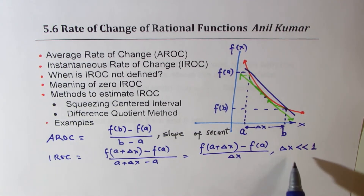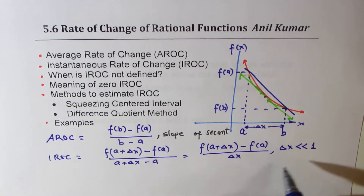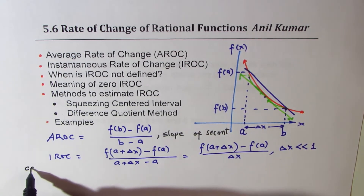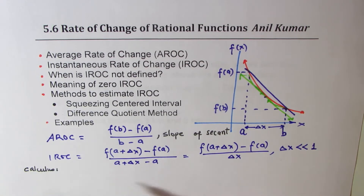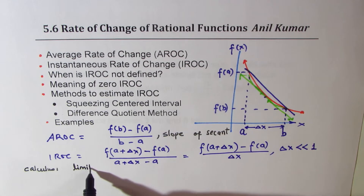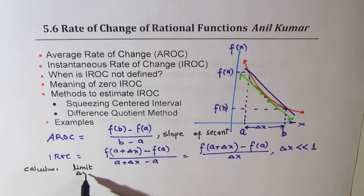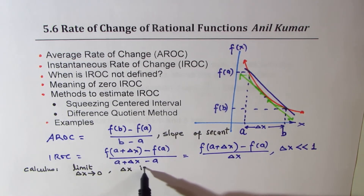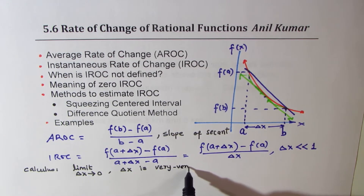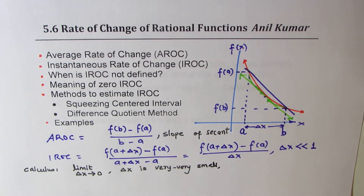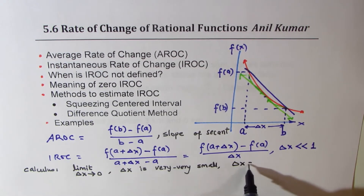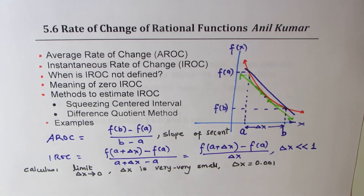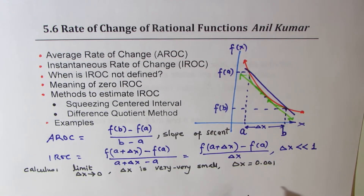In calculus, we use the term limit for this concept. We say: limit as delta x approaches 0. That literally means delta x is very, very small. For our calculations, we will take delta x as 0.001, which gives us a fairly accurate answer.